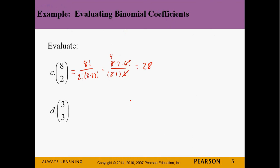And C(3,3) = 1. Remember: anything above itself is always one.